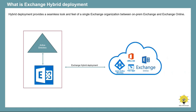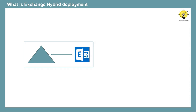Exchange Hybrid deployment provides a seamless look and feel of a single Exchange organization between on-premise and Exchange Online. Hybrid deployment lets two different organizations work as a single organization. If you have configured on-premise Exchange Server, Exchange Hybrid deployment allows users to use both the services provided by on-premise Exchange and Office 365, like Exchange Online, Exchange Online Protection, Microsoft Teams, and other Office 365 services.